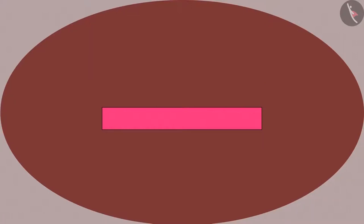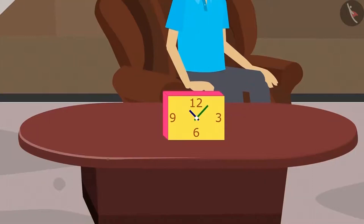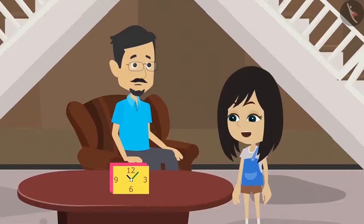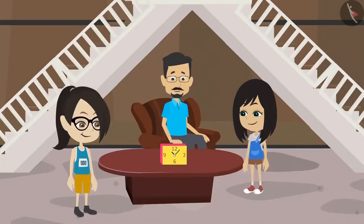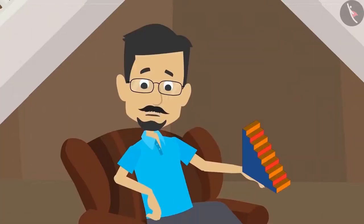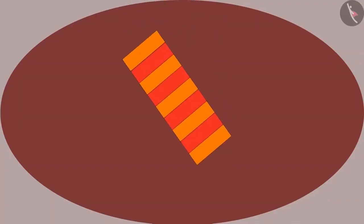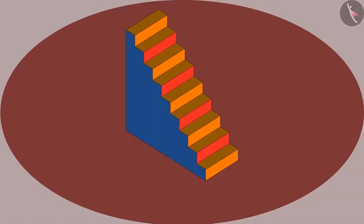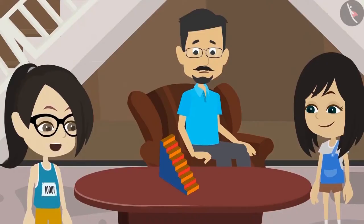For example, when you look from the top, the clock looked like a rectangle. But when you saw from the front, you could see a clock. Let me explain this with another example. I have a toy that is in the shape of a staircase. I will place this staircase on the table here. Now we will make a picture of it.